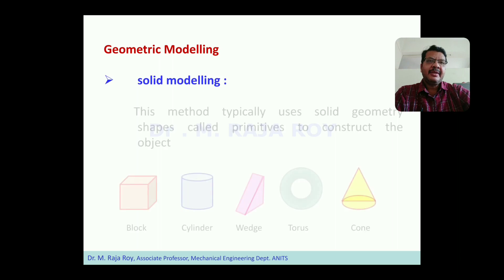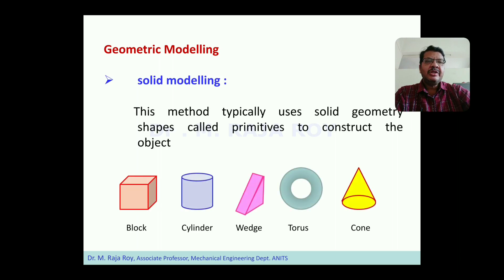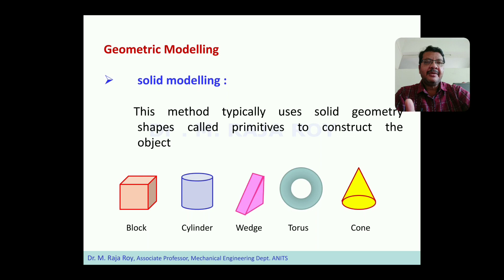Then comes solid modeling. Solid modeling means using a set of primitives like block, cylinder, wedge, torus, cone, etc. — predefined three-dimensional primitives. By combining these primitives, you can create any complex shape. The advantage of solid modeling is that any complex shape can be obtained and you can get the volume for it. When you generate the volume, that model is applicable for finite element analysis as well as for manufacturing modules.